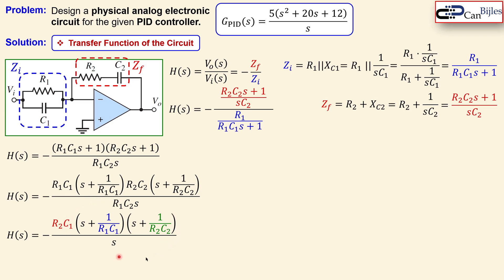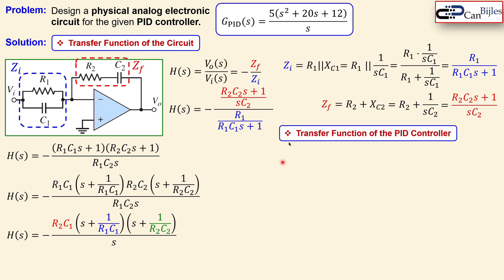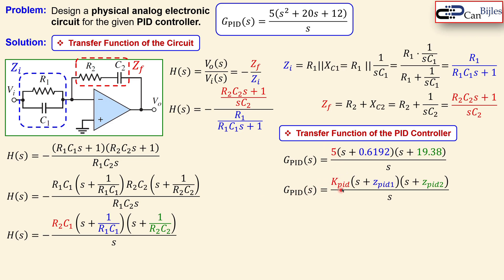This expression is not yet in the standard PID controller format, but we can transform it. For the PID controller transfer function, we look at the numerator and write s² + 20s + 12. We can factor this as (s + 0.6192)(s + 19.38), which is correct. This format lets us clearly identify the PID gain and the two zero frequencies by comparing the circuit transfer function to the PID form.